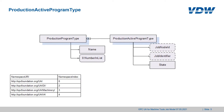The production active program type is shown on the right hand side of this slide. It optionally contains the job node ID and the job identifier, both used to link the program to the job it belongs to. It always has a node called state which indicates if the program is currently being run or not. The production active program type also inherits the program name and number in list from the production program type. Number in list is used to enumerate programs in a list, but for the active program we just keep it and say it's the only item in the list.